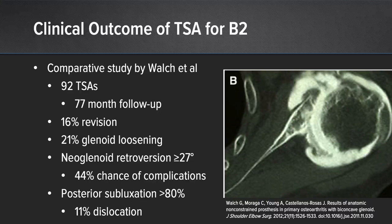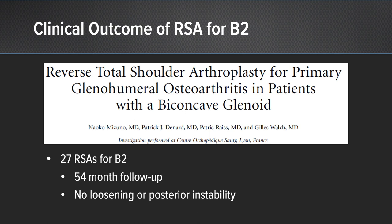This is why we know we have a high failure rate with B2 glenoids, as Joe Walsh has shown us in 2012, where he had a 16% rate of revision and 21% rate of neoglenoid loosening at five years, in particular when retroversion was greater than 27 degrees and posterior subluxation was greater than 80%. Conversely, when he looked at the same types of patients treated with a reverse for B2 glenoids, they had no loosening or posterior instability at five years post-operative — a big change.